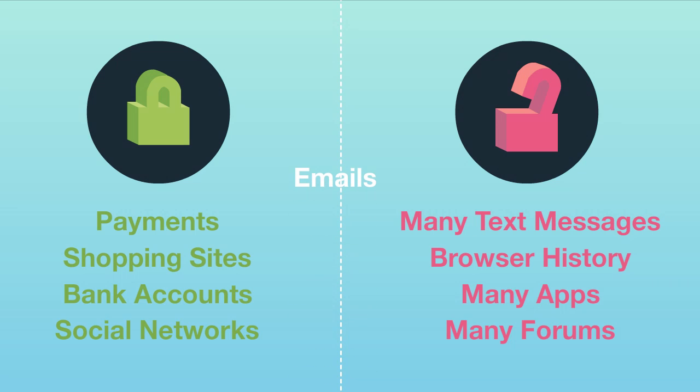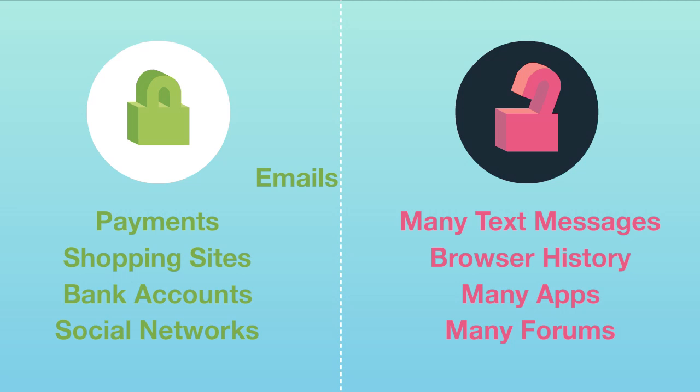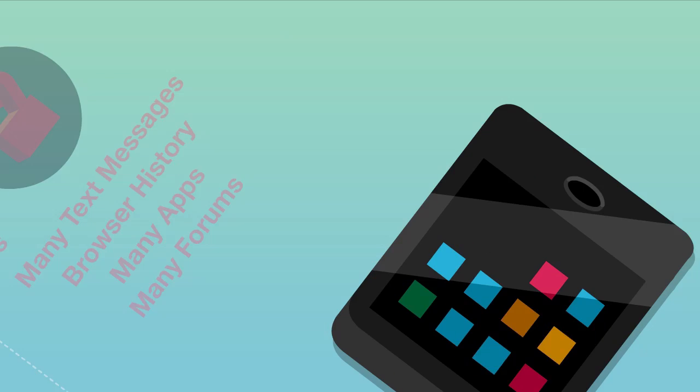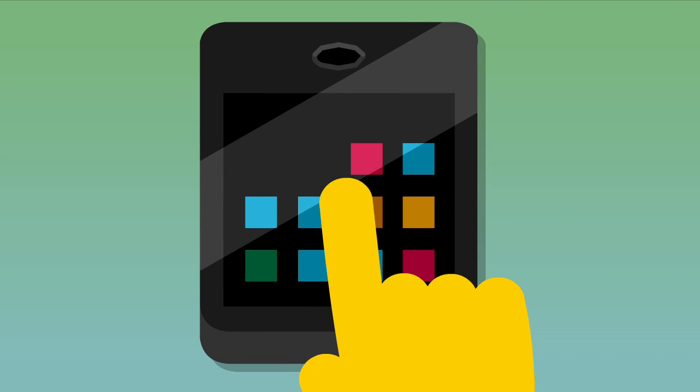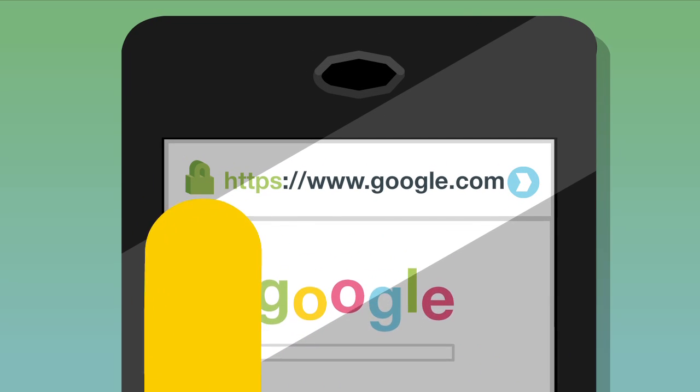Emails are complicated. They're usually encrypted when they're sent, but are sometimes decrypted before they get to their recipient. Some websites encrypt their traffic, you can tell by looking for the lock symbol in a URL.